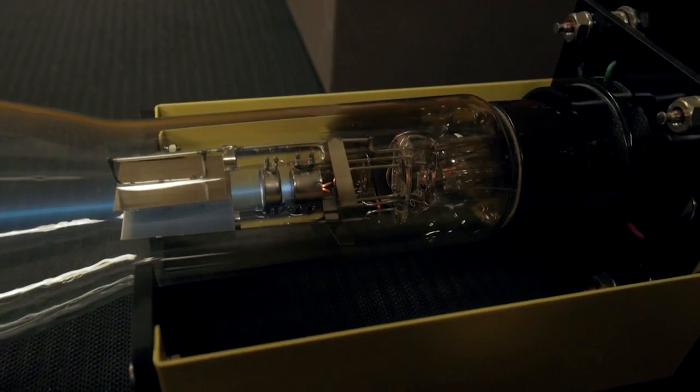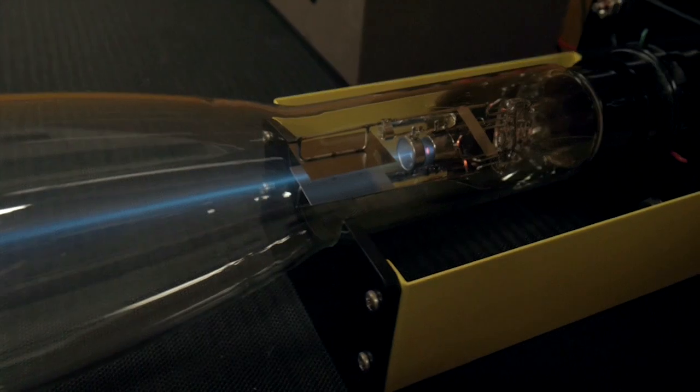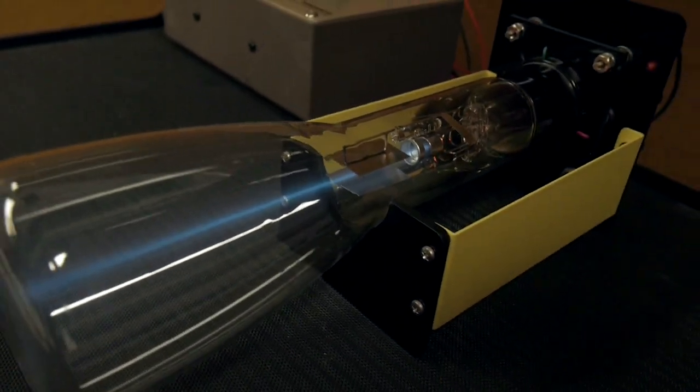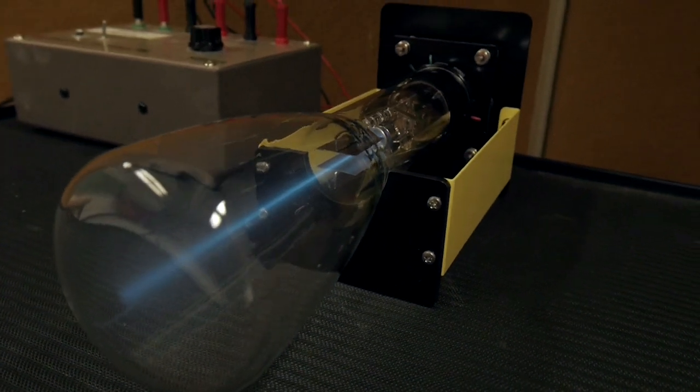This is a cathode ray tube, which produces a beam of electrons. The beam is visible due to argon gas in the tube. The electrons here are moving so fast that gravity is negligible.